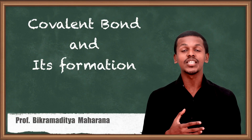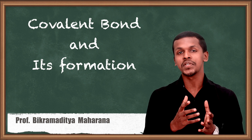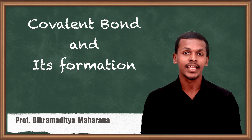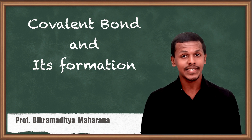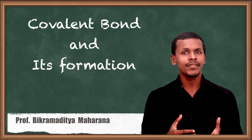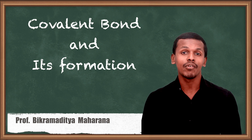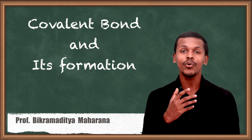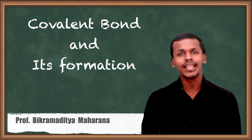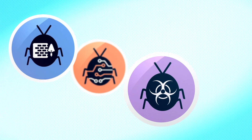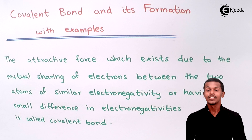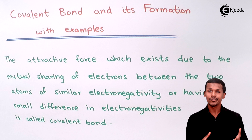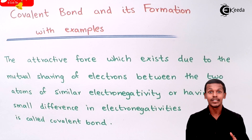Hello friends. In the previous lecture we got to know what is ionic bond and we discussed about a few examples where ionic bond is formed, such as NaCl and CaCl2. Now we are going towards the next type of bond, that is covalent bond. So what is actually covalent bond and how does bond formation take place? Let us understand it.